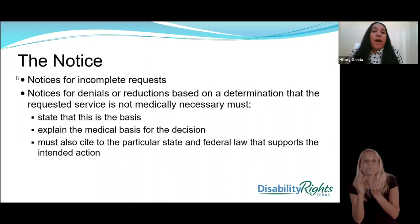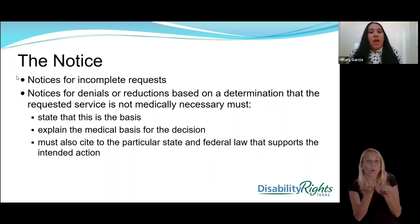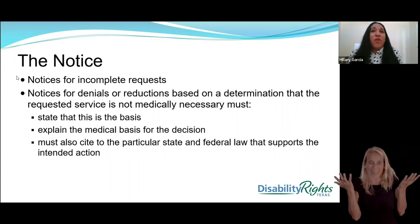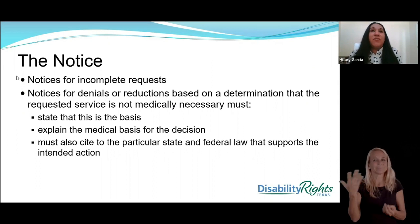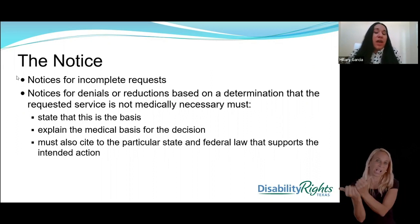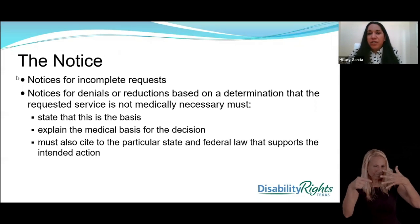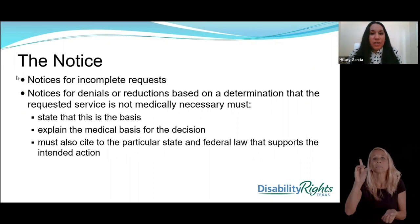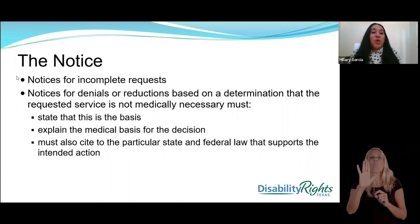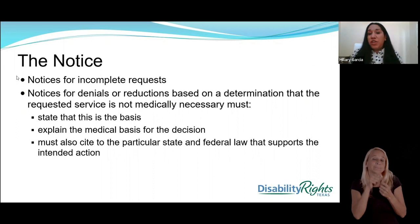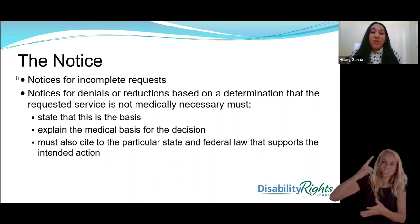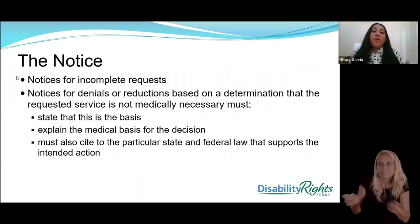Your health plan might receive a request for a service and/or equipment. They can give you notice if they've requested information from the agency acting on your behalf but don't have all the information needed to make a decision — that's where you get a notice saying they received an incomplete request. For example, if you've requested a wheelchair with specific specifications and your durable medical equipment (DME) agency has submitted the request, you might receive a notice saying 'we didn't receive this particular document.' That puts you on notice to check in with the DME agency so this can potentially be resolved before they make a formal decision.